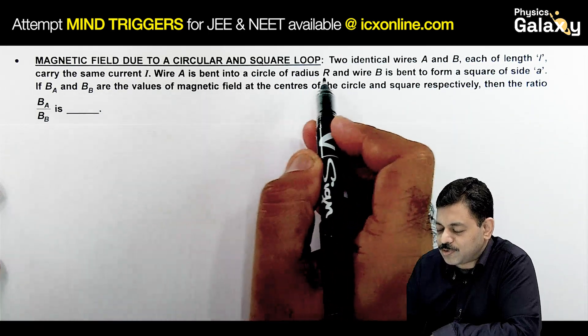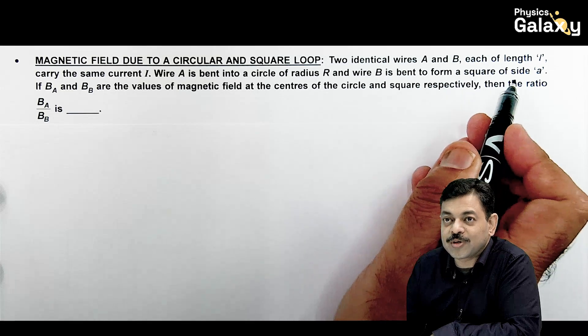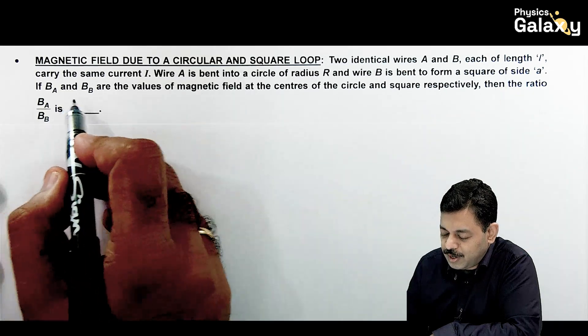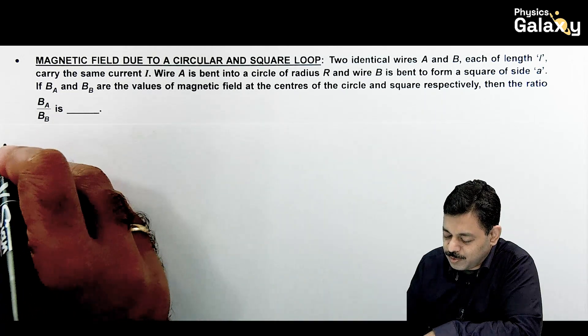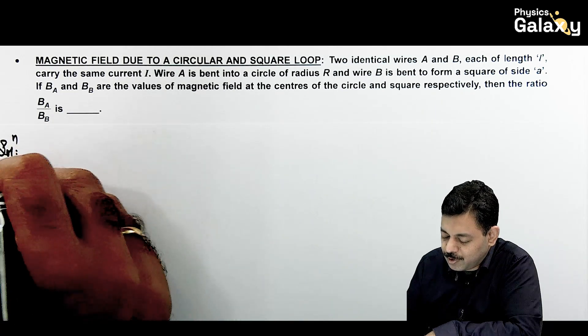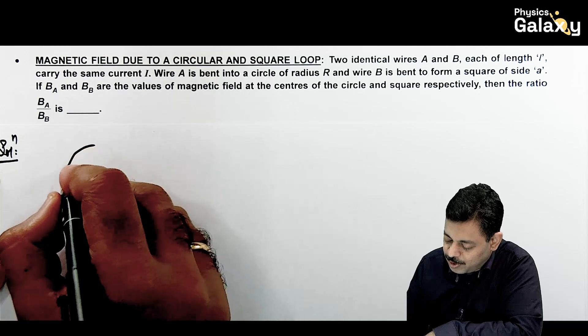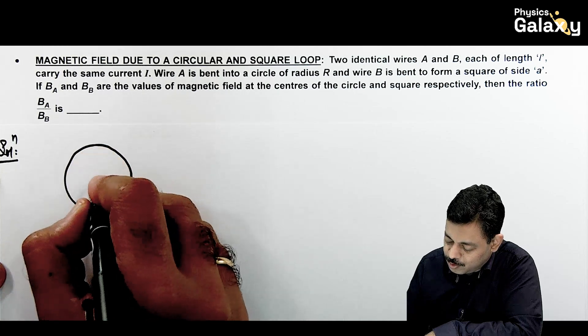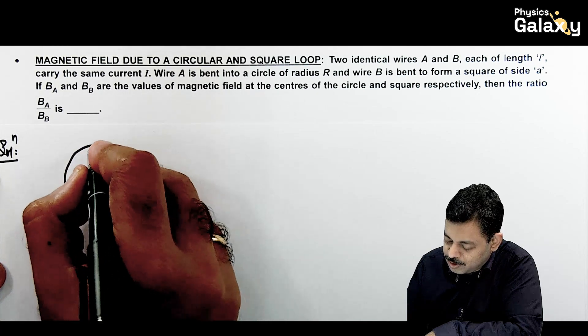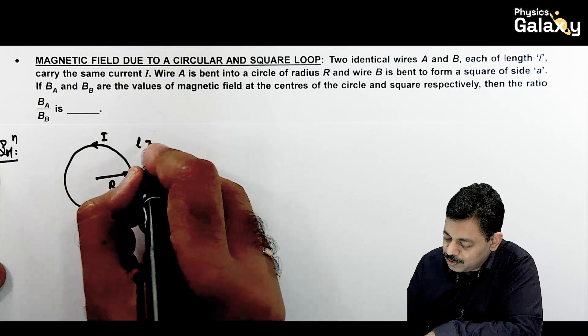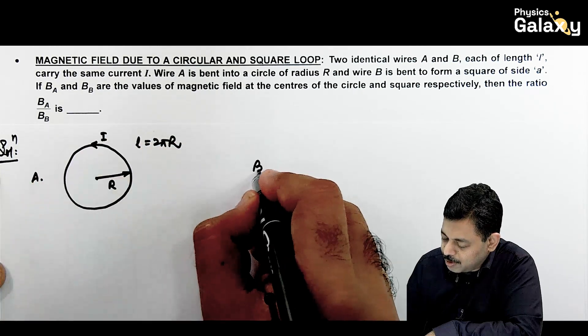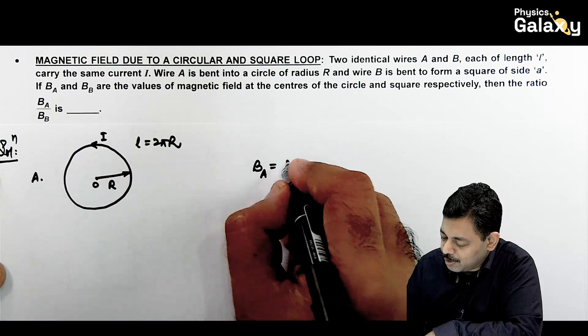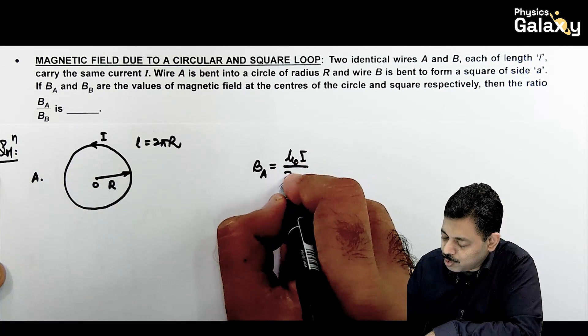If Ba and Bb are the values of magnetic field at the centers of circle and square respectively, we need to calculate the ratio Ba by Bb. In the first case, wire A is bent in form of a circular loop of radius r. Current i flows through it. Length of wire we can write as 2 pi r. In this case, magnetic field at center, that is magnetic field at A, we can write as mu naught i by 2r. If we substitute r value, this gives mu naught i pi by l, because r is l by 2 pi.